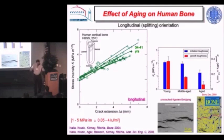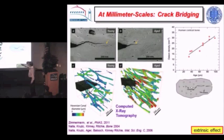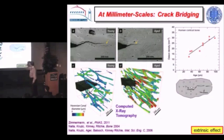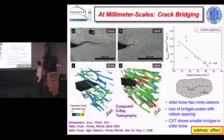How does this degrade with aging? At 35 years old there's good toughness versus crack extension, but by 70 and 90 years old there's a massive reduction in both initiation toughness and crack growth toughness. Looking at extrinsic mechanisms: young bone has larger bridges than old bone. The bridges form at osteonal boundaries, and when you grow old you get many more osteons — the spacing between them drops and the size of the bridges drops. So the 'toffee gets smaller' as you age. There's a strong correlation of toughness versus osteonal density that supports this.